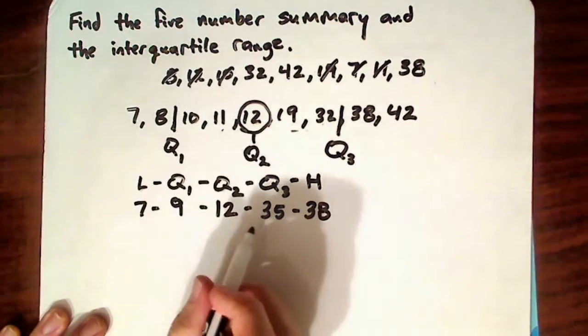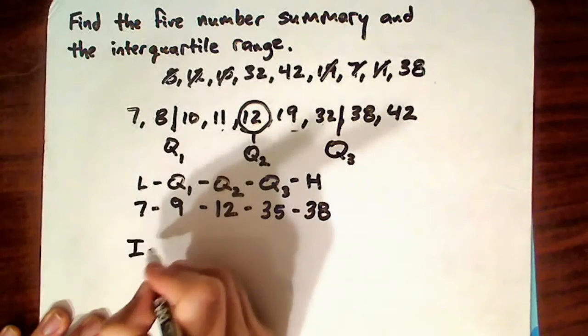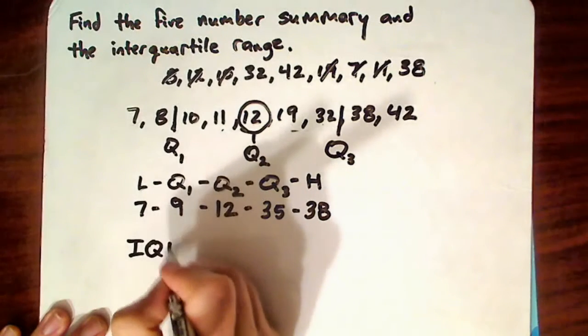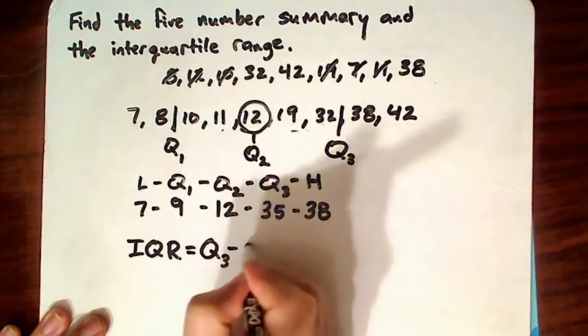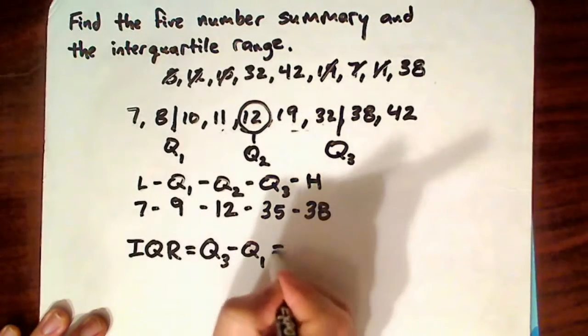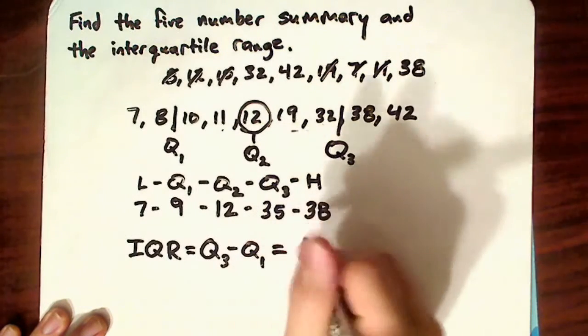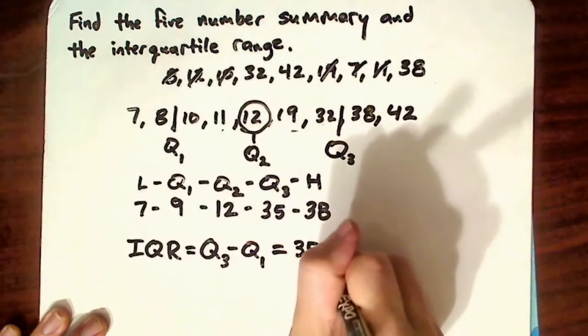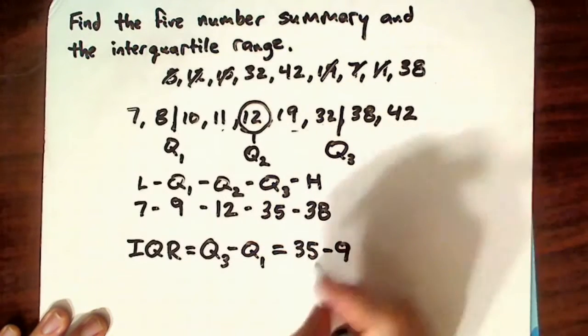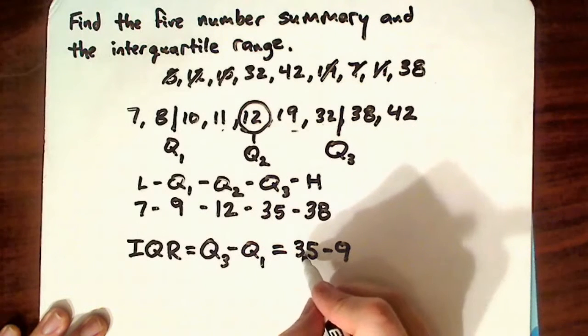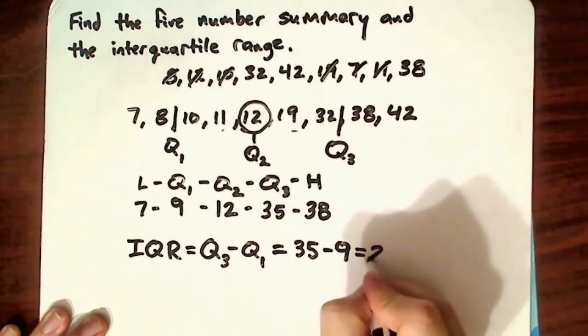So that's the five-number summary. Now, let's calculate the interquartile range, which is the third quartile minus the first quartile. The third quartile is 35. And the first quartile is 9. So I subtract it, 35 minus 9 is 26.